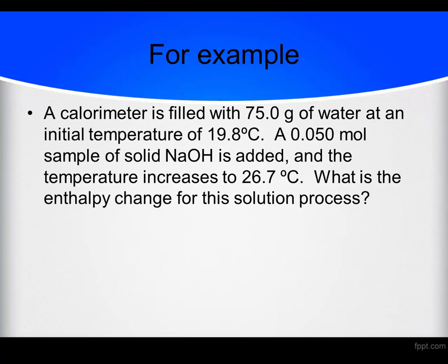The first thing we wind up doing in a reaction like this is we've got to know the Q of the reaction — how much energy was given off. In order to calculate Q, I need to know M, S, and delta T. Now there's only going to be one substance here that I've got enough information for. Which substance is that? Water, right? So I'm going to calculate the energy gained by the water.